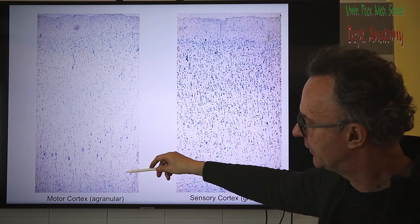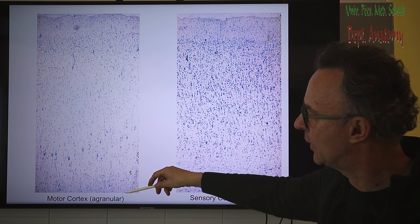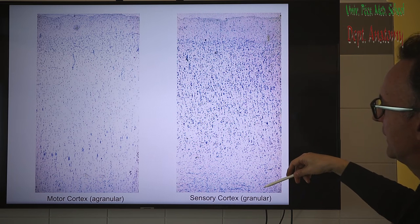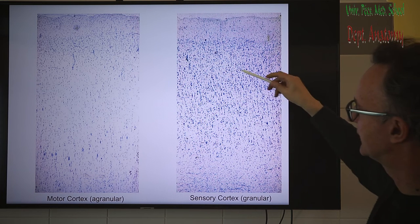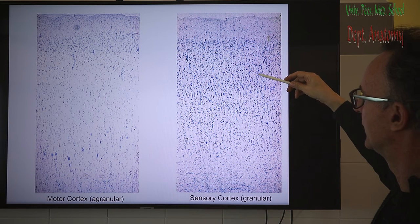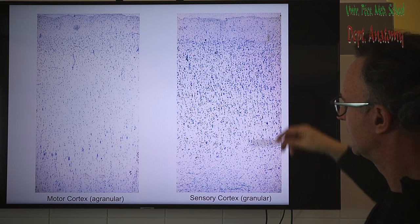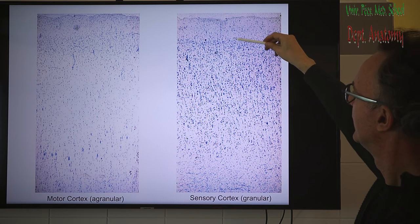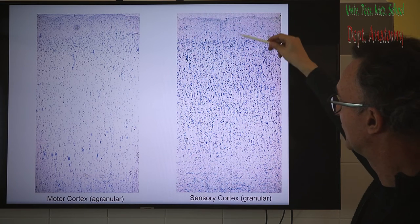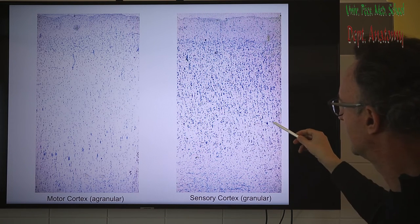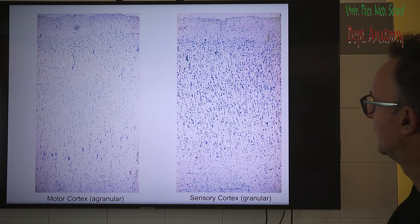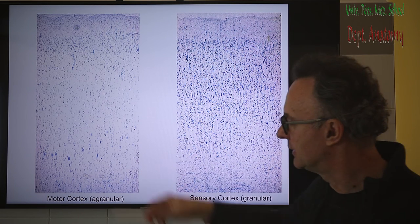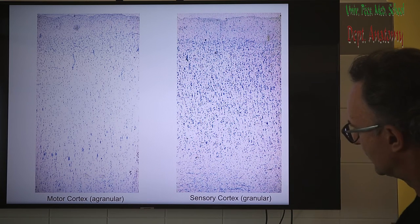In the motor cortex, the first layer is relatively pale, the second rich in cells, and the fifth is identifiable by the giant pyramidal cells of Betz, then the third, fourth and the multiform layer at the bottom. In the sensory cortex, also called the granular cortex because relatively fewer pyramidal cells are seen, it is more difficult to distinguish the different layers — we can see the molecular layer on top and roughly identify the fifth layer with larger pyramidal cells, though not as large as in the motor cortex. The multiform layer is thinner than in the motor cortex.